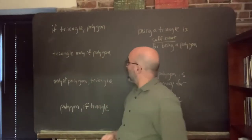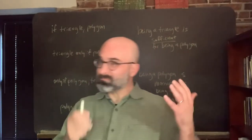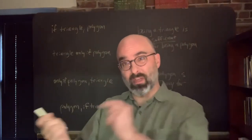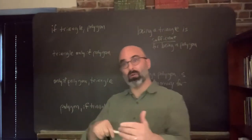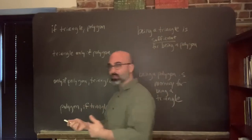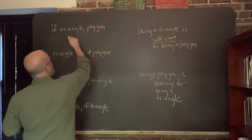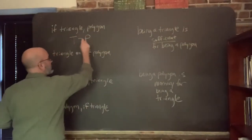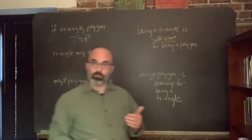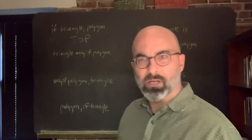If something's a triangle, it's a polygon. 'If' claims go in the antecedent of conditionals, then claims go in the consequent. So, if something's a triangle, then it's a polygon — T horseshoe P. Triangle horseshoe polygon. That's a familiar conditional.